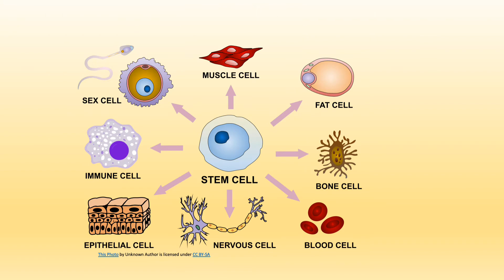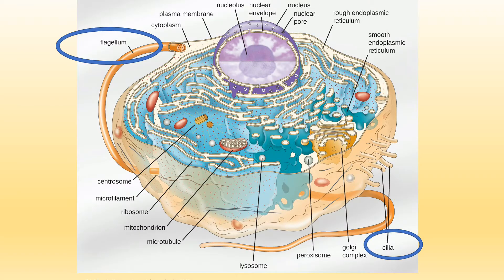Animal cells are specialized — they are differentiated according to their size, shape, and functions. In this slide, I wanted to point out the projections from the cell membrane. Just know that not every animal cell has these projections, but only special types that we will talk about.